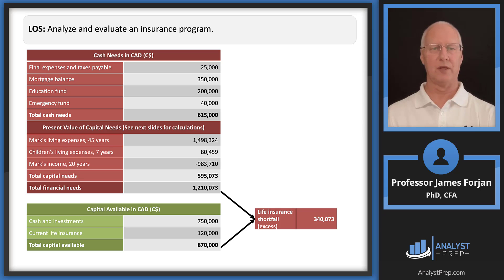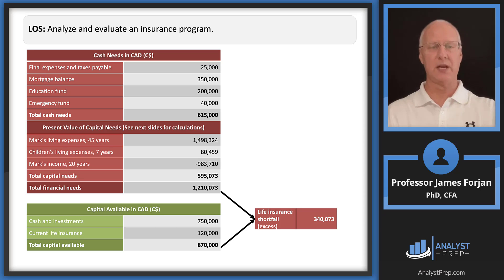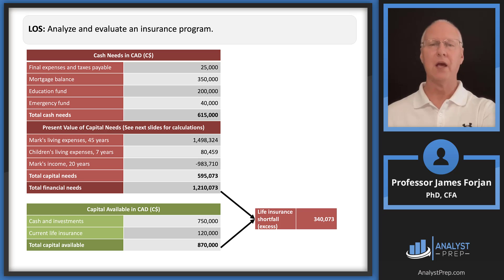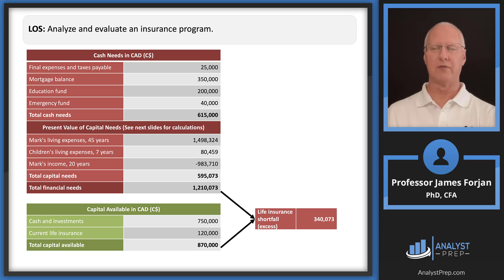Total capital needs: there's the $595K in present values plus the $615K in cash needs, giving total financial needs of approximately $1.2 million. Total capital available was $870,000 from the previous table. The difference between $1.2 million and $870,000 gives the shortfall: we need approximately $340,073 worth of life insurance.